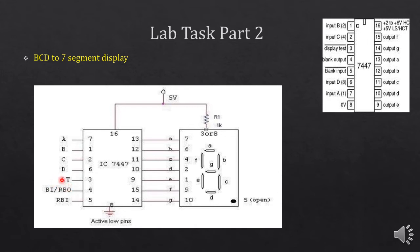When you apply 0 to the lamp test pin, all the LEDs of the 7-segment display will glow. If any LED is not glowing, it means our 7-segment display is faulty. If all the LEDs are glowing, it means our 7-segment display is working fine. The RBO and RBI pins are used when you want to connect multiple 7-segment displays. Currently we are using only one 7-segment display, so these pins are not required.